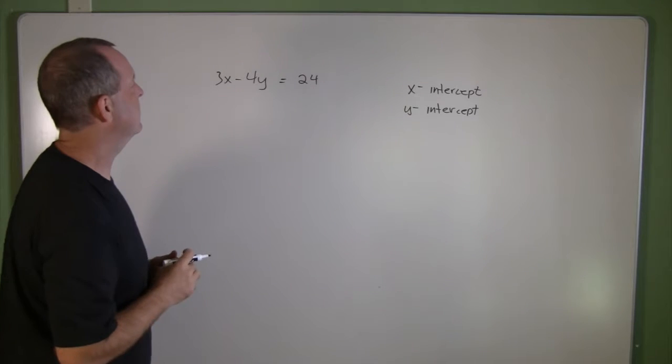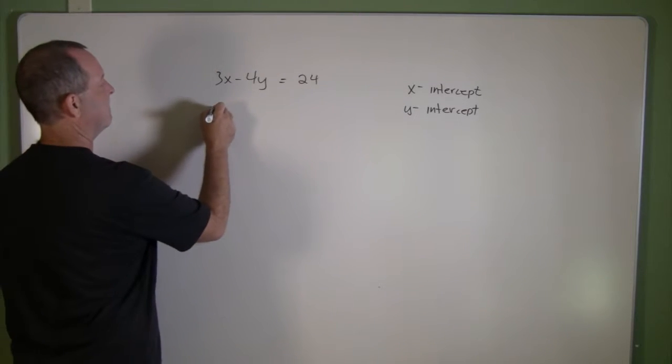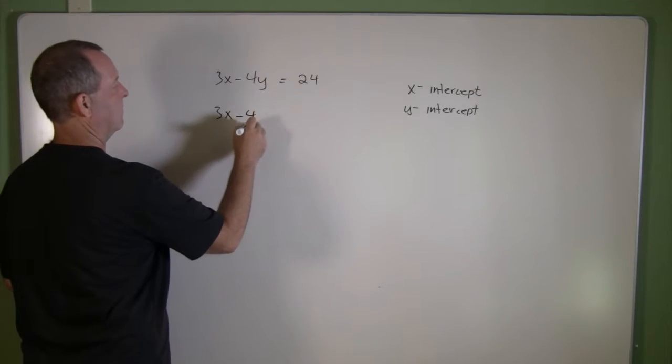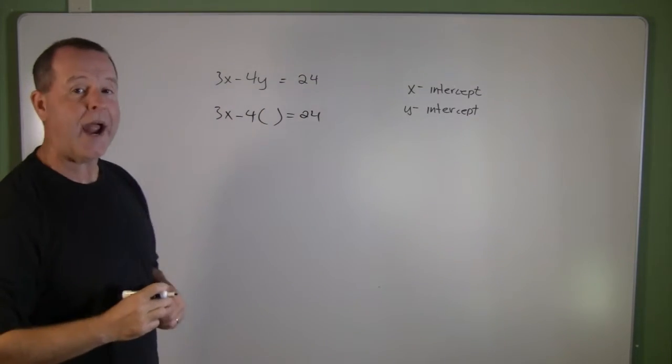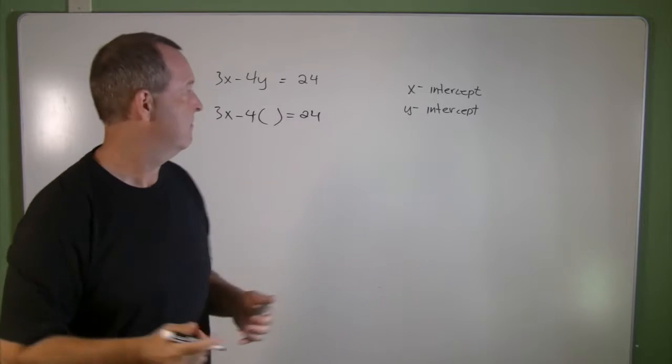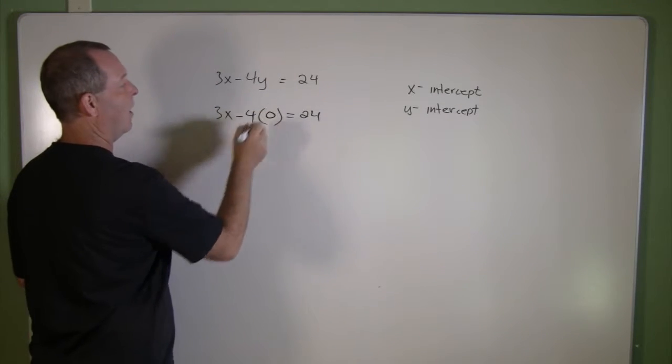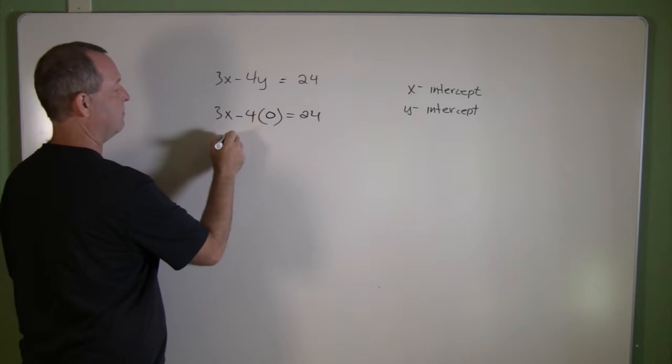So the x-intercept means that its y-coordinate is 0. I can substitute 0 in for y and solve this problem.